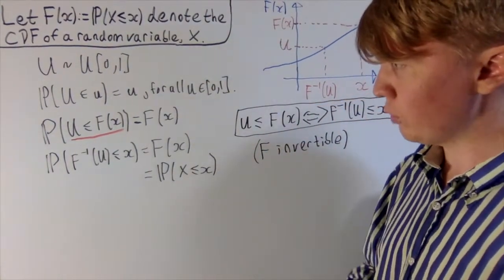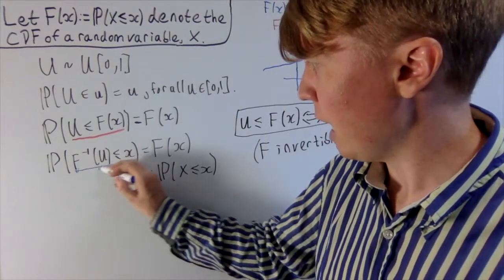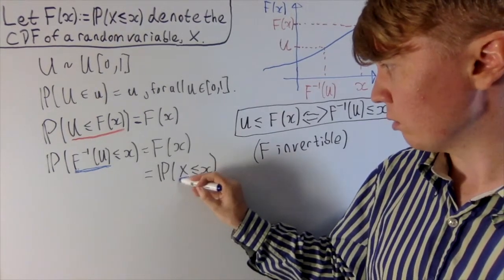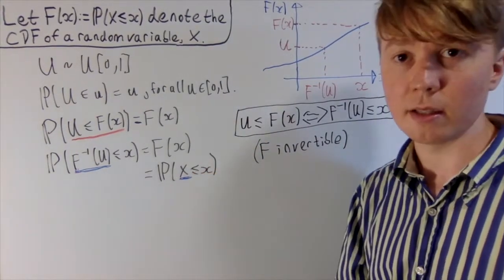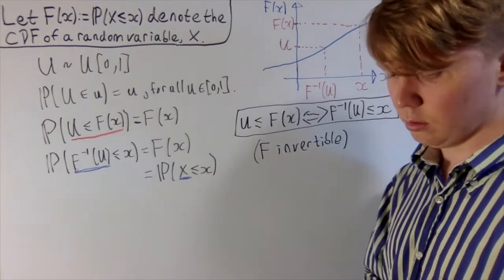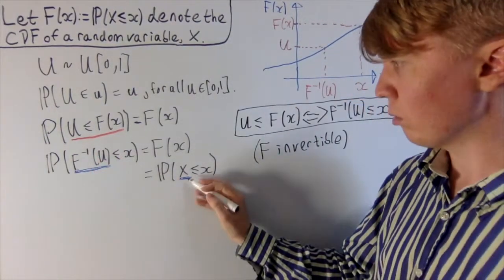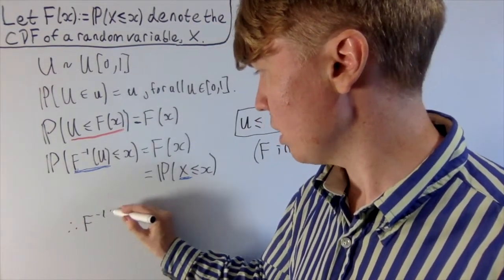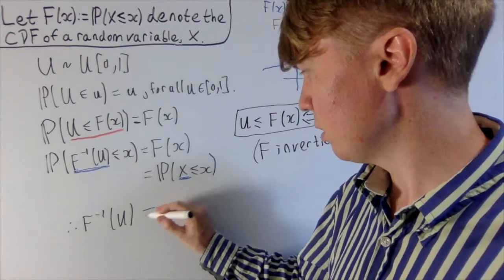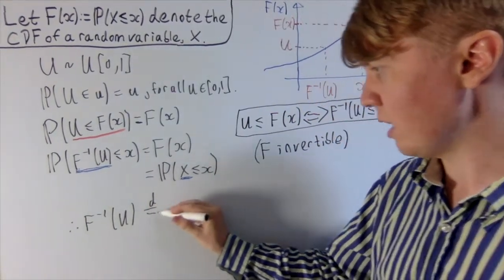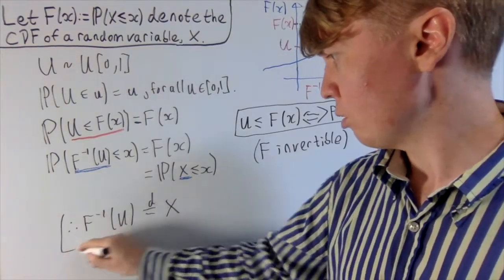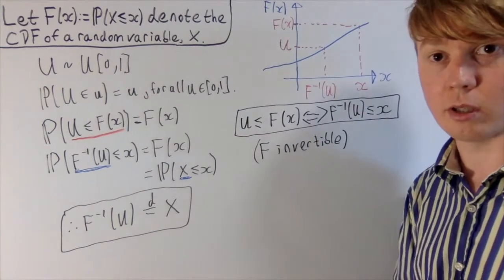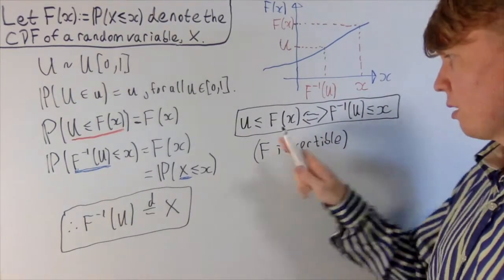So what have we shown? We've shown that the probability that F-inverse of U is less than or equal to x, for all values of x, is always equal to the probability that capital X is less than or equal to x. This means that F-inverse of U and our random variable X have the same distribution — because if you've got the same CDF, you have the same distribution; they're equal in distribution. So F-inverse of this uniform distribution has the same distribution as X, assuming F is invertible.